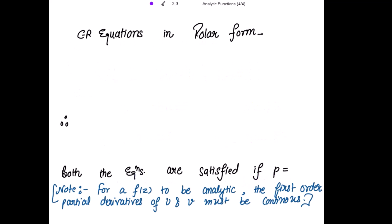The Cauchy-Riemann equations in polar form are: first, ∂u/∂r = (1/r)·∂v/∂θ, and second, ∂v/∂r = −(1/r)·∂u/∂θ.